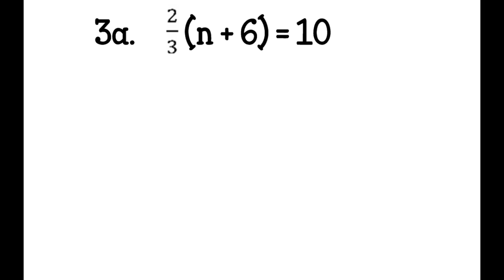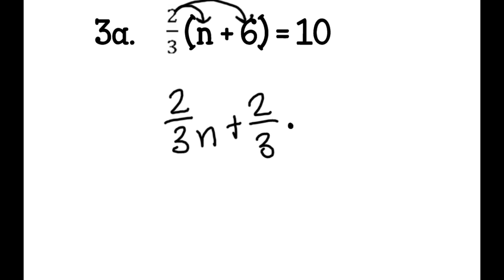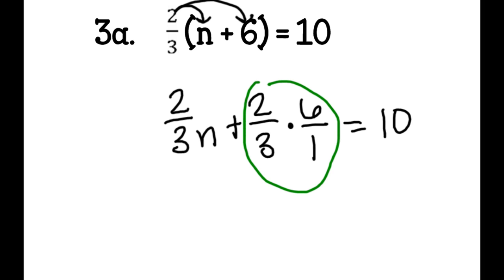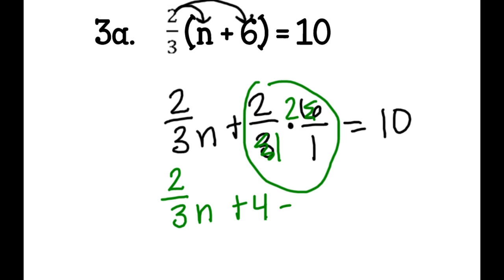Problem 3a: I have 2 thirds times the quantity of n plus 6 equals 10. This is where things get tricky. 2 thirds times n is 2 thirds n, plus 2 thirds times 6. Some people can do that in their head; I'll write it out this first time. This is multiplying fractions. 6 and 3 can be reduced — 3 goes into 6 two times, so 3 becomes 1, and it's 2 times 2 over 1, which is 4. So I rewrite this as 2 thirds n plus 4 equals 10.